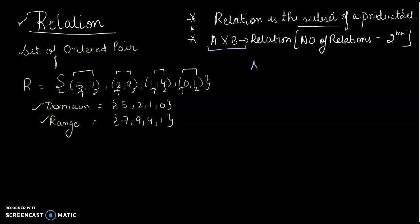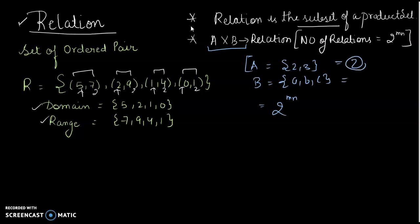If they ask you the number of relations, you have to write 2^(mn). For example, A has two elements {2, 3} and B has three elements {a, b, c}. The total number of relations possible is 2^(2×3) = 2^6.